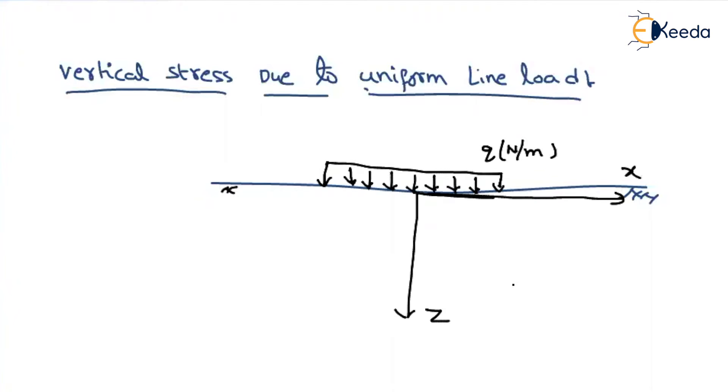Suppose we want to find out stress at any point. Let us say the point where you are finding this stress having coordinates X and Z. Then we can find out this stress that will be equal to 2Q divided by pi Z into 1 divided by 1 plus (X divided by Z) whole square. X and Z are nothing but coordinates of the point where you are finding the vertical stress.